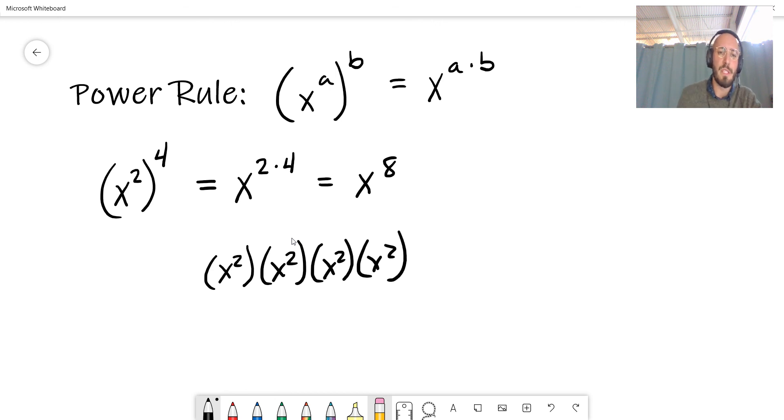So if we were to expand each one of these x squareds, well, we know that x squared is equal to x times x. And if each one of these is multiplied together, we can expand all of them.